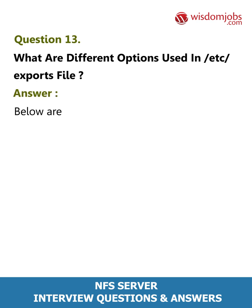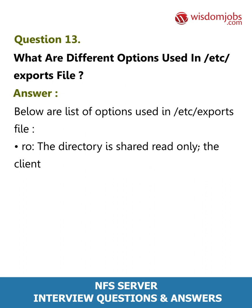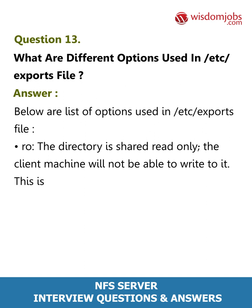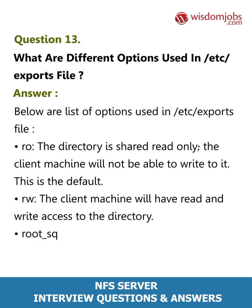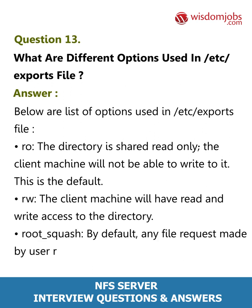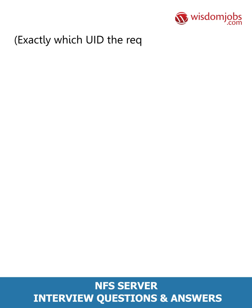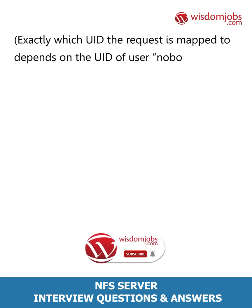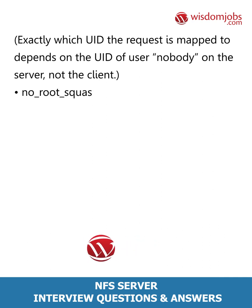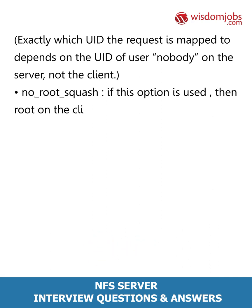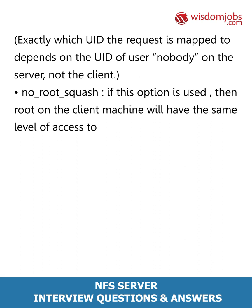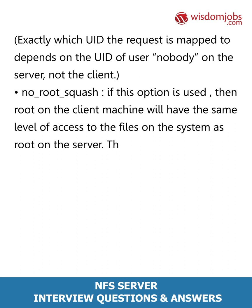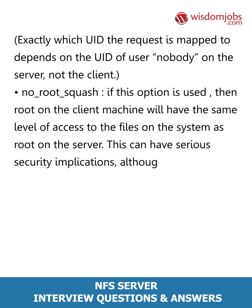Question 13: What are the different options used in the /etc/exports file? Answer: ro — the directory is shared read-only; the client machine will not be able to write to it (this is the default). rw — the client machine will have read and write access to the directory. root_squash — by default, any file request made by user root on the client is treated as if made by user nobody on the server. no_root_squash — root on the client machine will have the same level of access as root on the server.